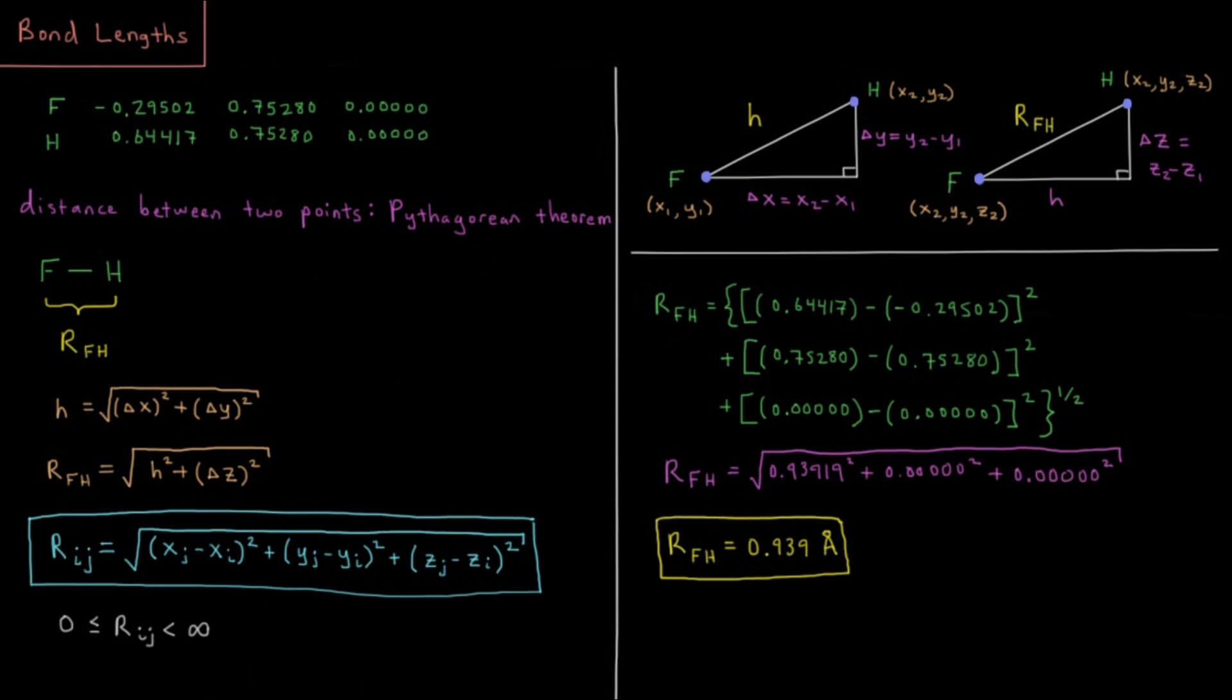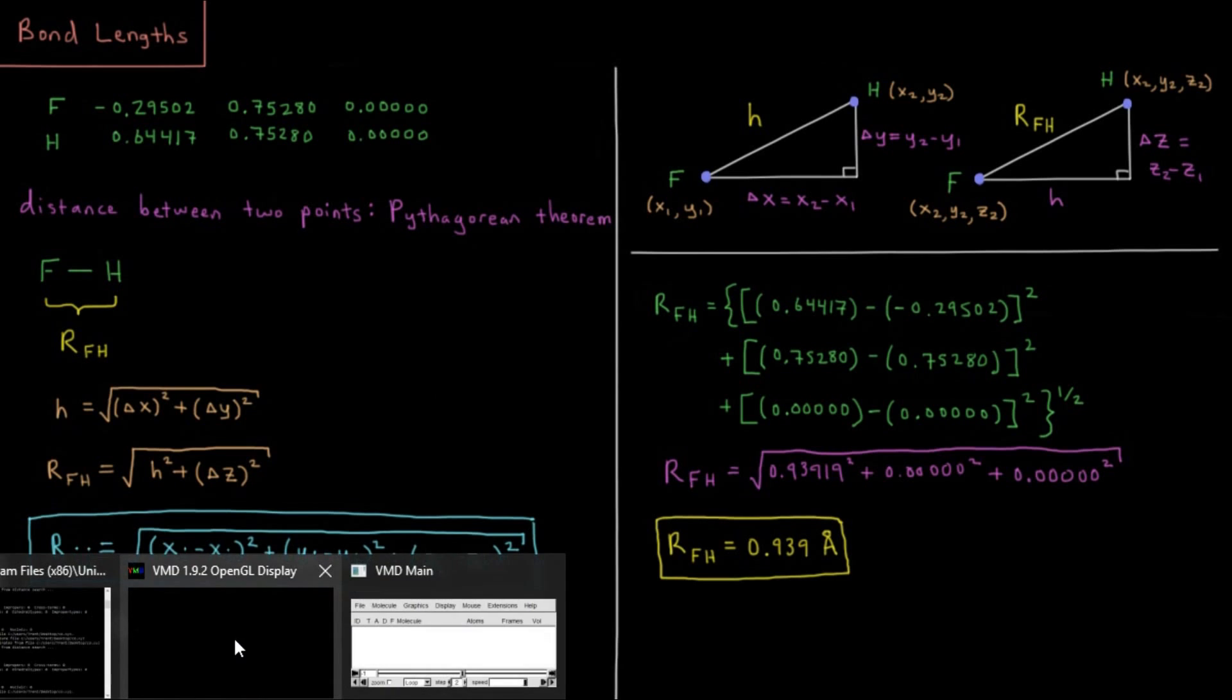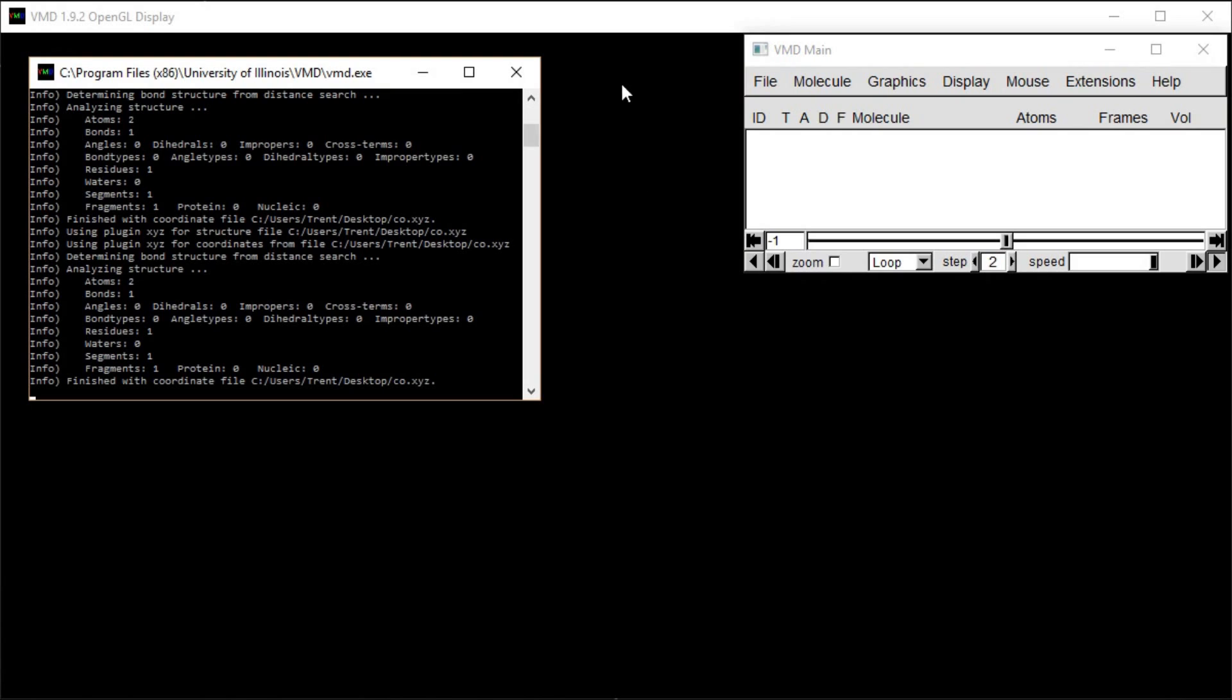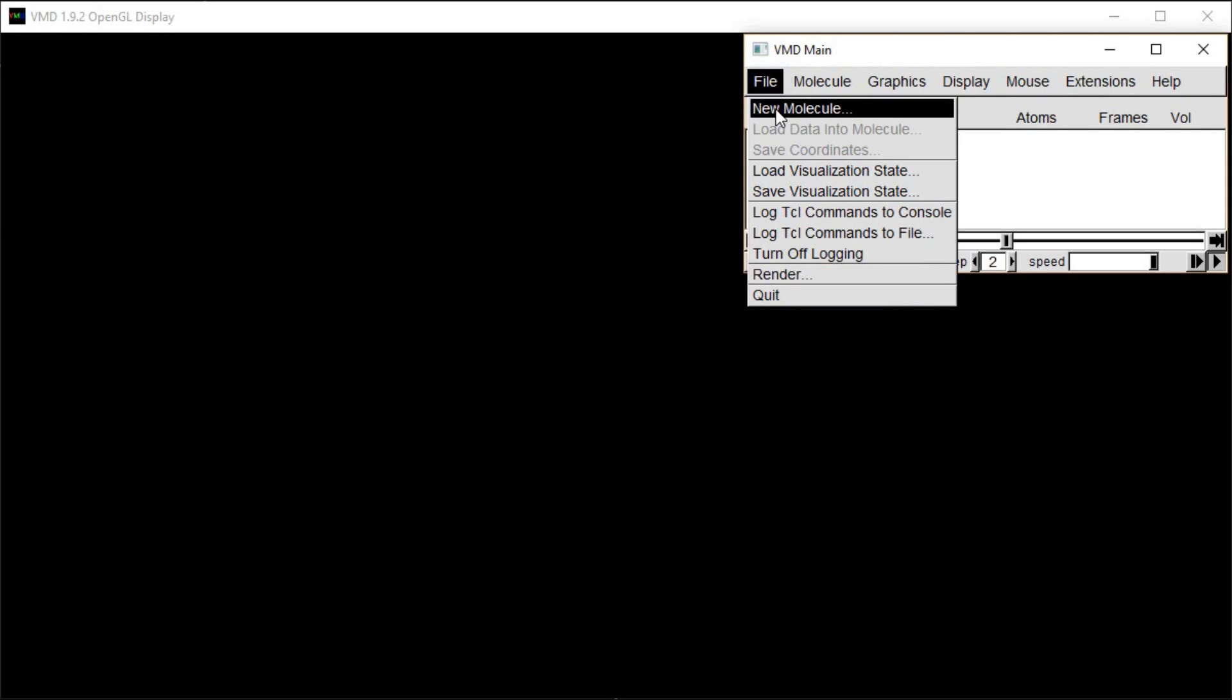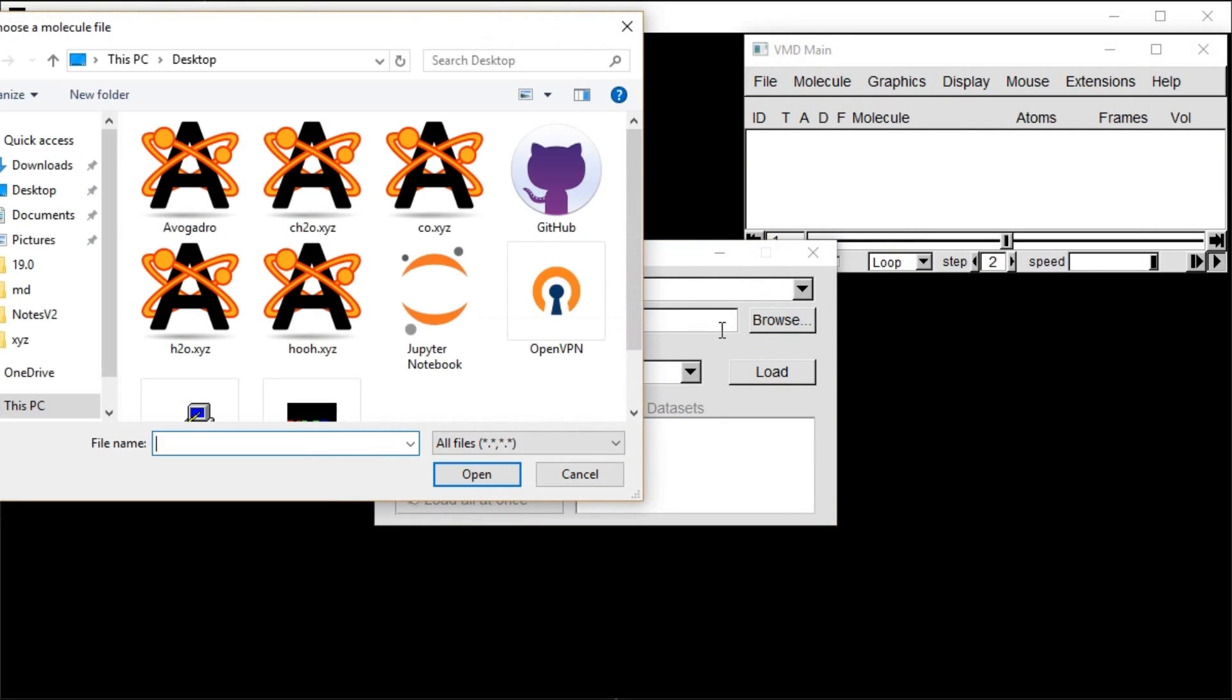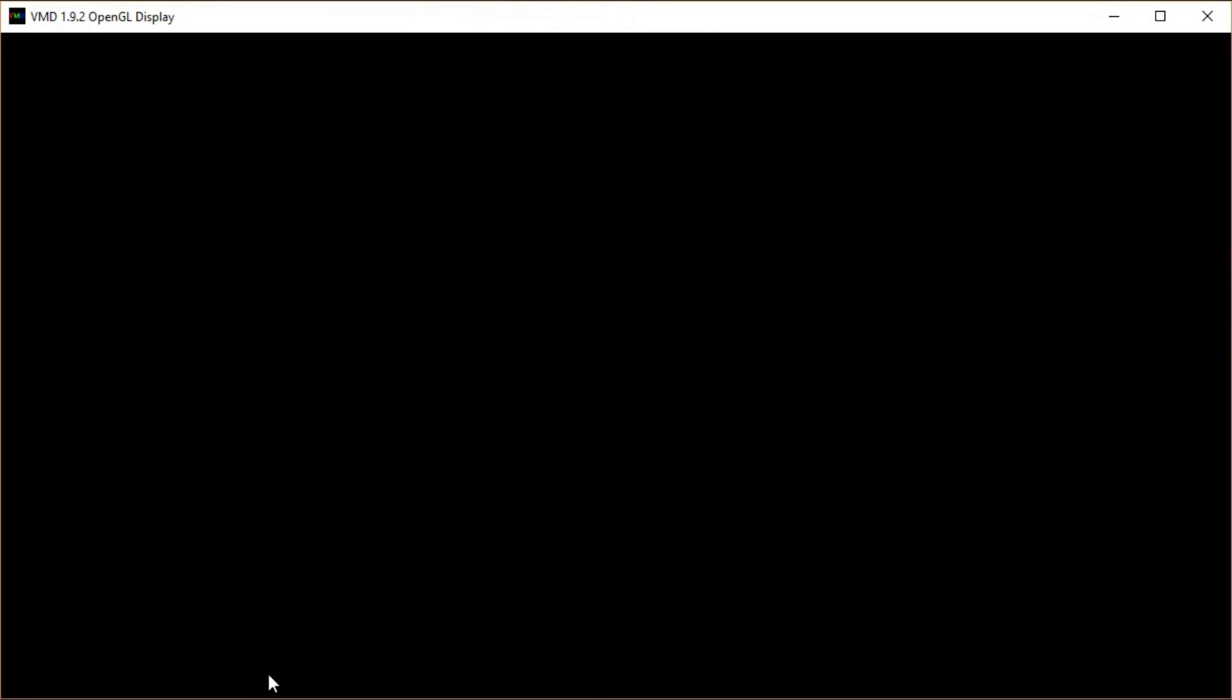As an example, let me bring up VMD. I'm going to bring up the display. When you bring up VMD, you get three windows. We get the main display, the menu, and then this TCL terminal. This one I'm not really concerned with. I'm going to minimize that. So I'm going to load this file that I have of just a vibrating bond. I'm going to browse for new molecule.